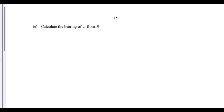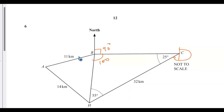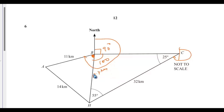Calculate the bearing of A from B. Going back to the diagram, the bearing of A from B means we need to calculate this small shaded angle, which is angle ABH. The bearing of A from B will be the addition of three angles: 90 plus 100 plus that angle ABH. We know side BH is 13.7 kilometers, and we know all three sides, so we use the cosine rule.